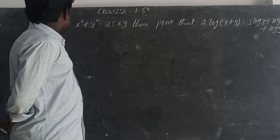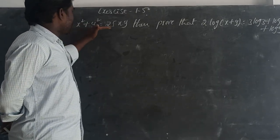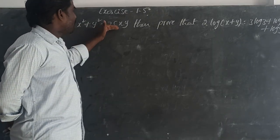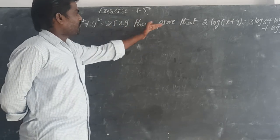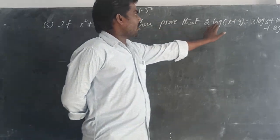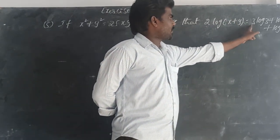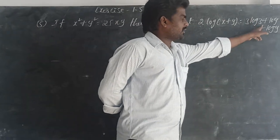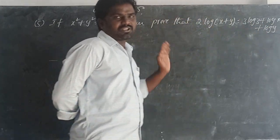Fifth one: if x squared plus y squared is equal to 25xy, then prove that 2 log of (x+y) is equal to 3 log 3 plus log x plus log y.